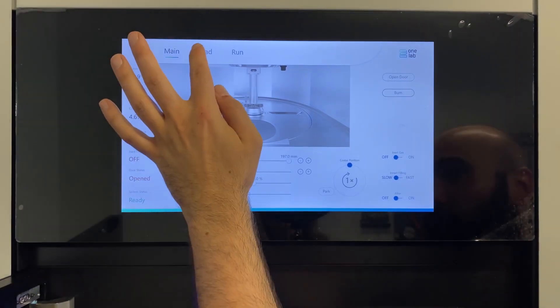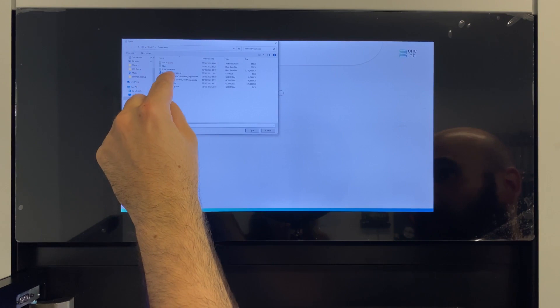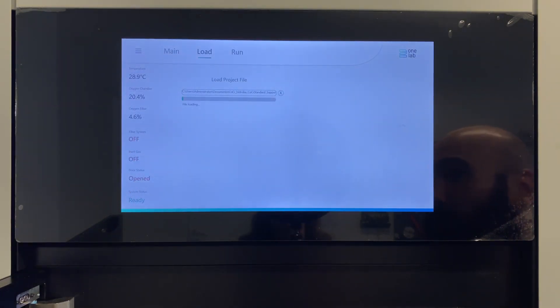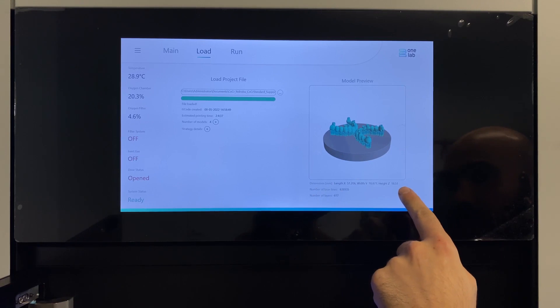For that, we need to go to the load tab to the browser and select our printing job. And wait until it's fully loaded. Now that our project is fully loaded, you can see the height in Z-direction, which is in this case around 90mm.